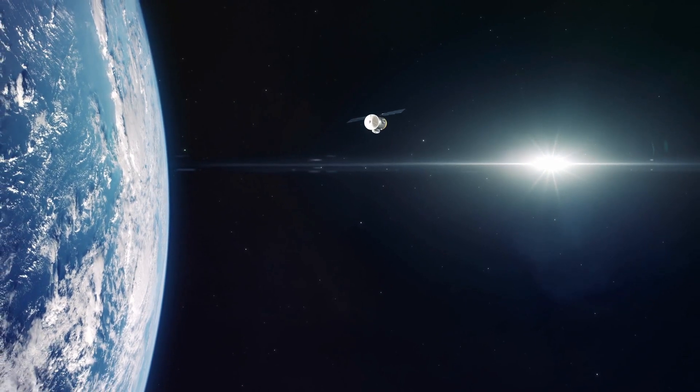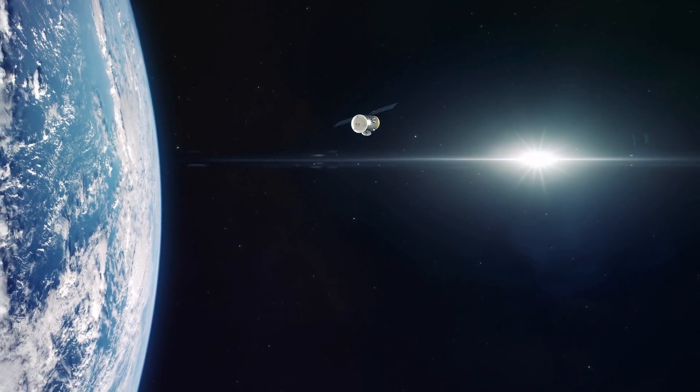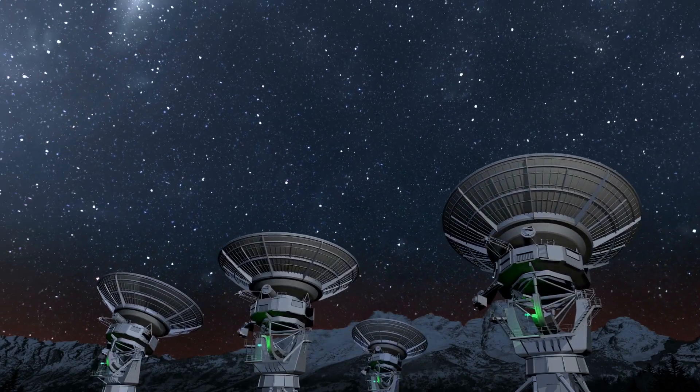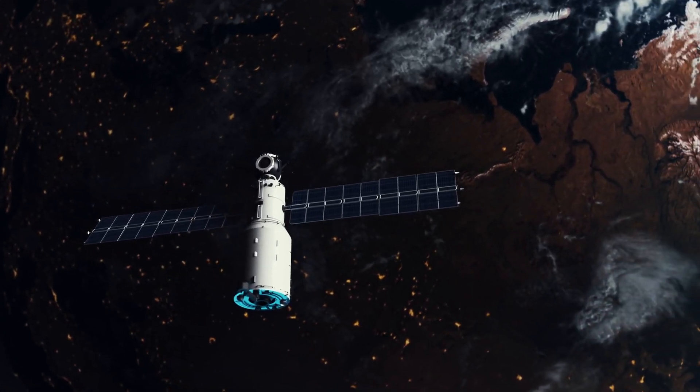The spacecraft has an extra power source that's vital to its functioning. They feature tiny thrusters that enable them to face the ground for communication when needed. These thrusters use hydrazine fuel.